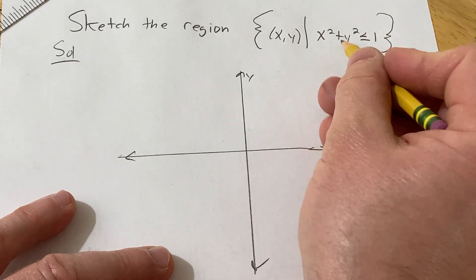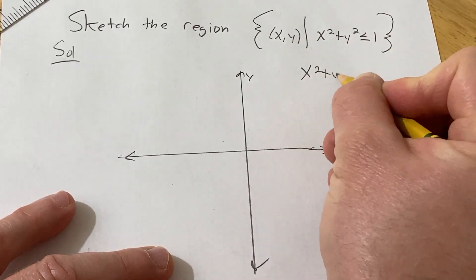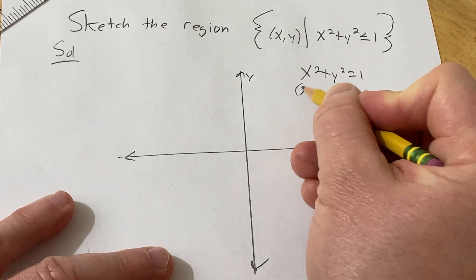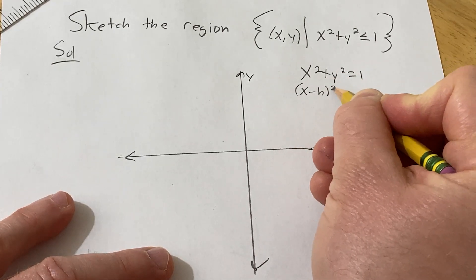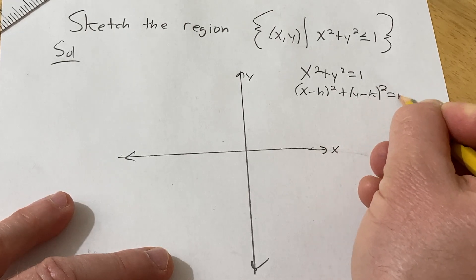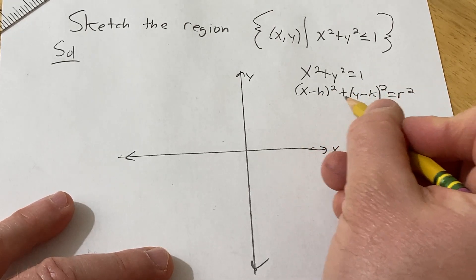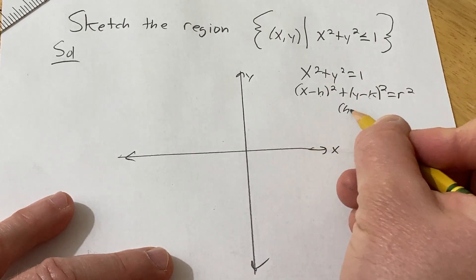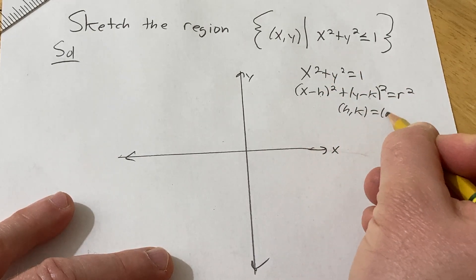So if you just look at x squared plus y squared equals 1, and you think about the equation of a circle, which is (x minus h) squared plus (y minus k) squared equals r squared, you can see here that h and k don't appear in this formula, so that means h and k is basically the ordered pair (0, 0).